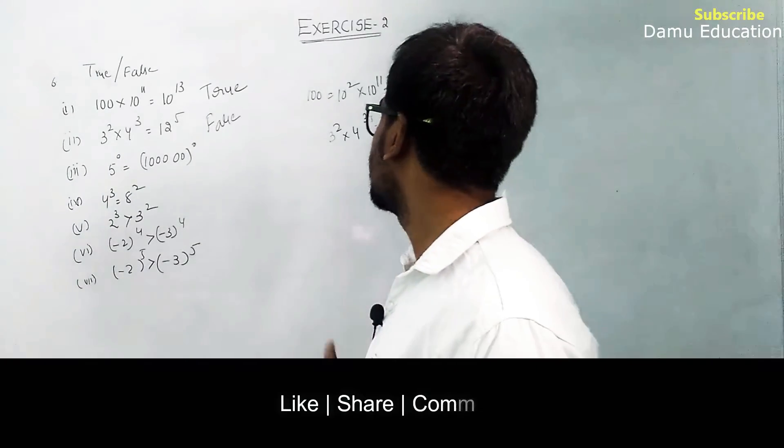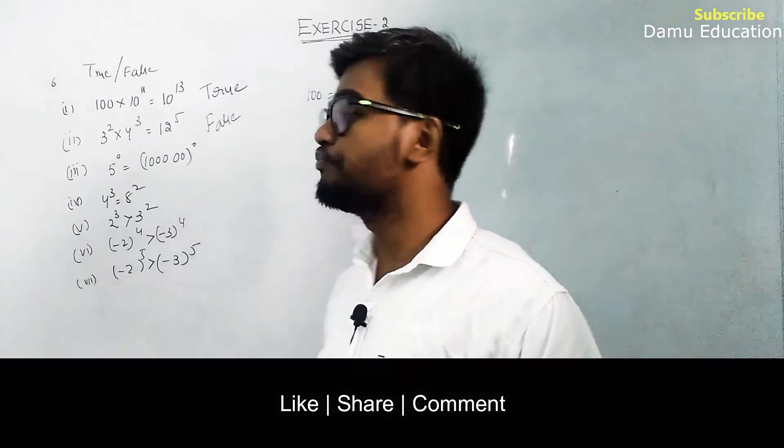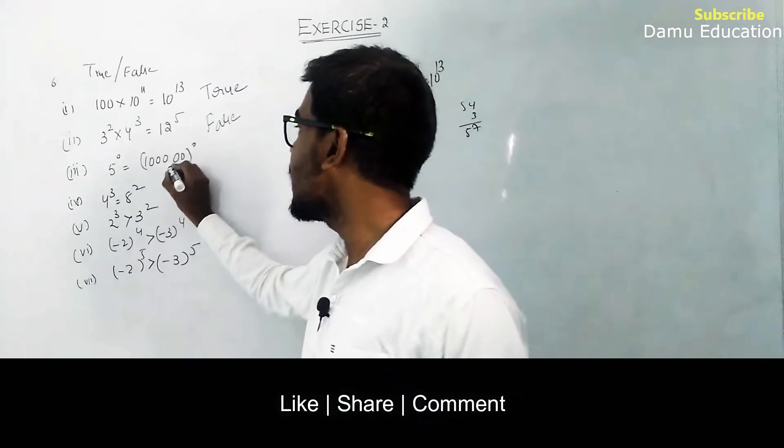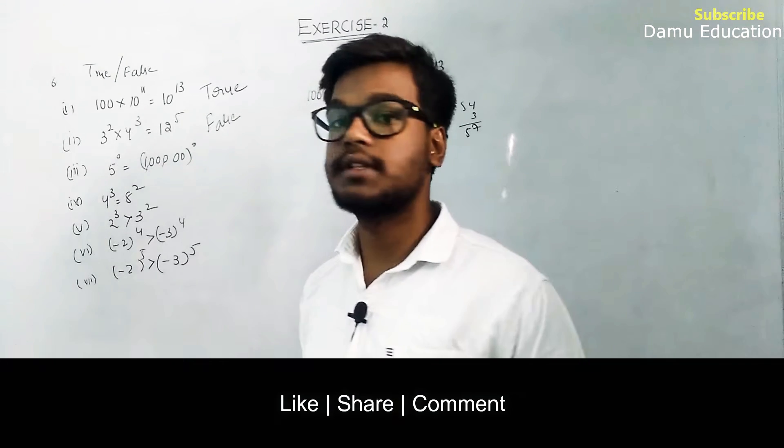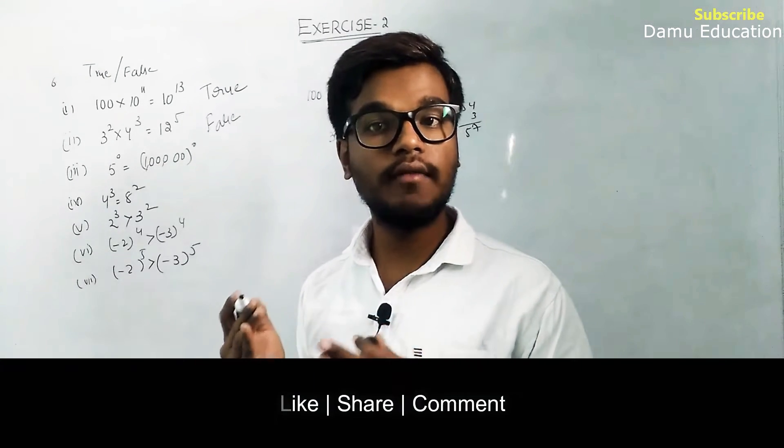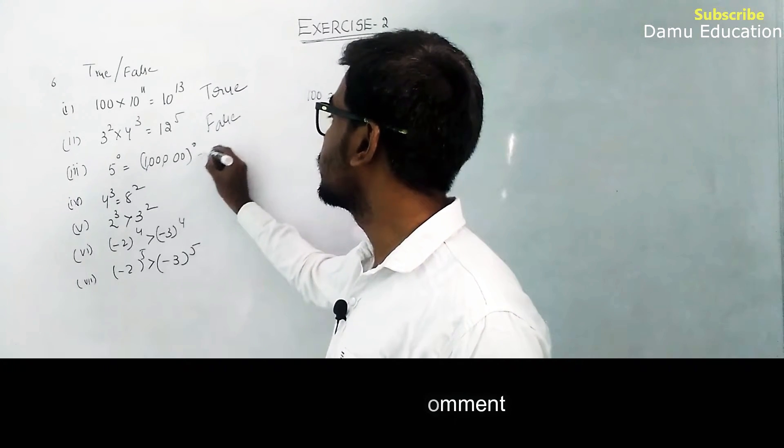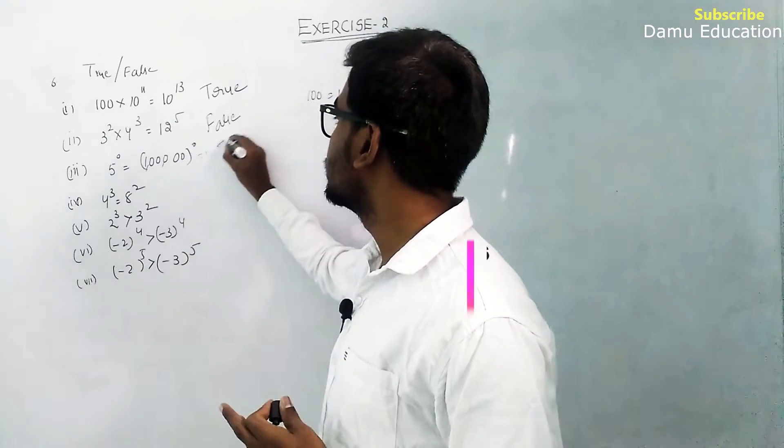Next: 5^0 = (100000)^0. Anything to the power 0 is always 1. So it will be 1 = 1. This is true.